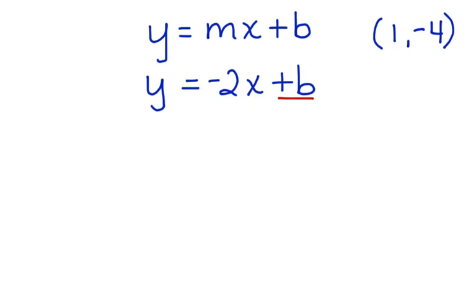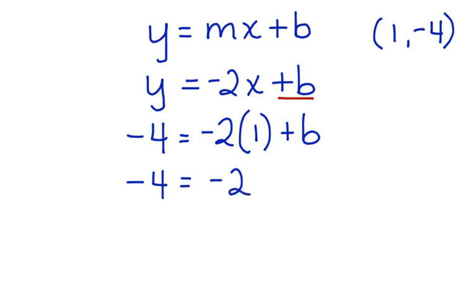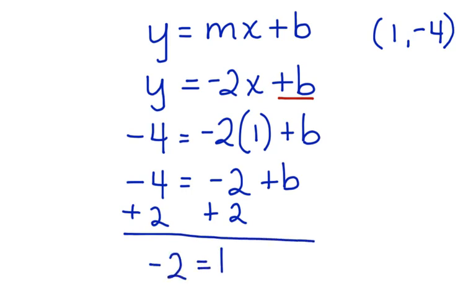Let's use 1, negative 4 and substitute those values back into this equation for x and y. Next, we multiply negative 2 times 1 which is negative 2 plus b. We add 2 to both sides so that we can get b alone. We've got negative 2 is equal to b. This is our y-intercept.